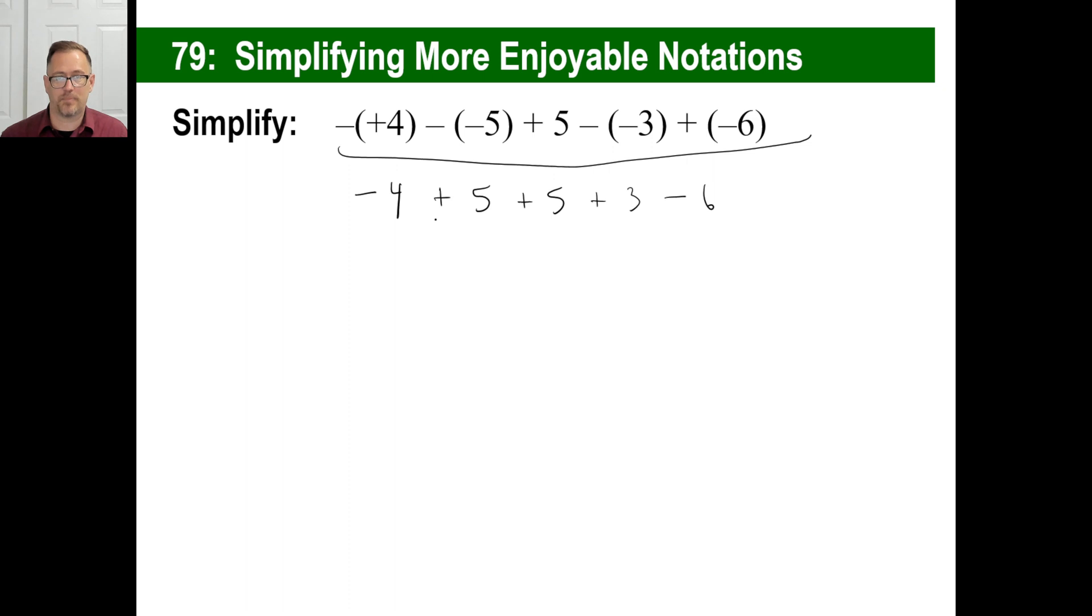So we can clump the positives together. Here, there's a 5, there's a 5, there's a 3. That's 13. I've got a -4 plus a -6. That gives me -10. So 13 minus 10, 3. Boom, you're done. That's it.